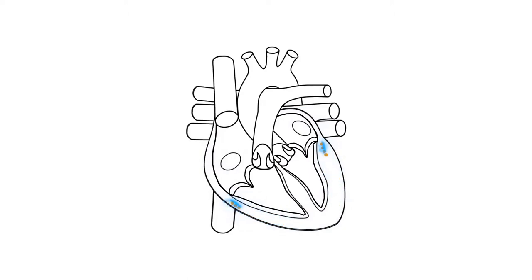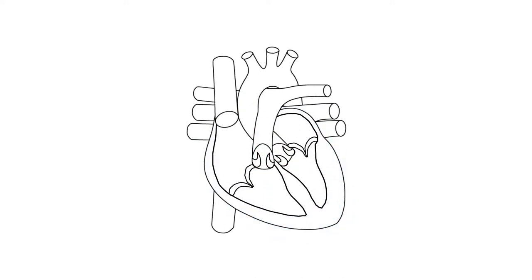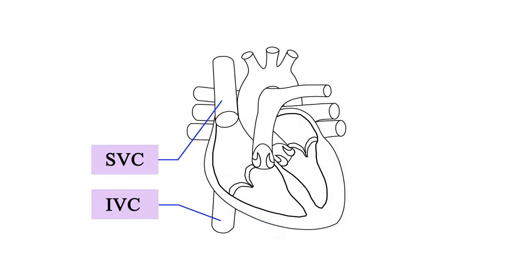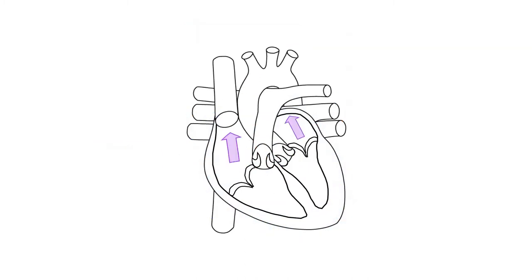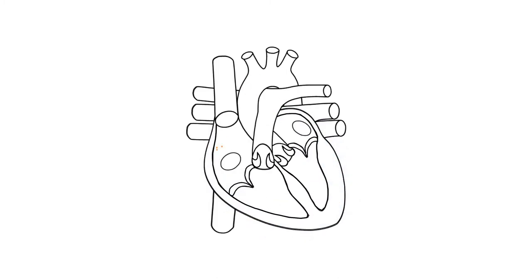The direction of electrical signaling and subsequent contraction allows for maximizing blood flow through the heart. Blood is pumped from the atria into the ventricles, and blood in the ventricles is then pushed from the bottom up. If contraction had originated in the ventricles, they would contract before finishing filling with blood. The right atrium receives blood from the inferior and superior vena cava, and the left atrium receives oxygenated blood from the pulmonary veins. The electrical flow allows enough time for blood to fill the ventricles before they contract, optimizing the volume of blood per contraction.